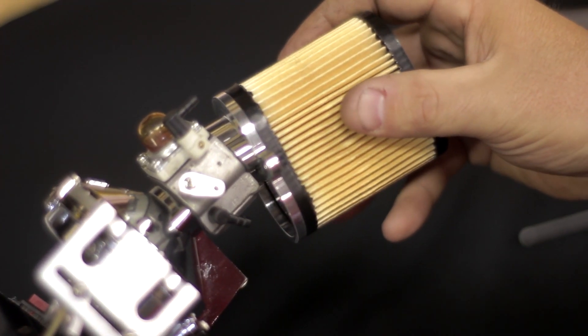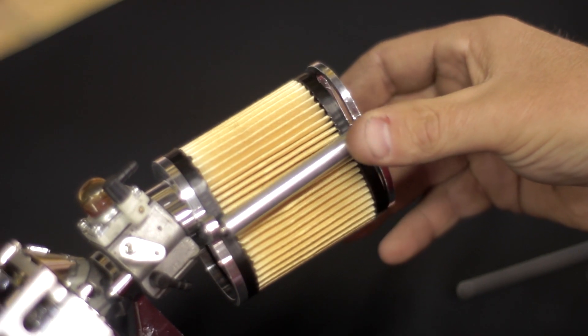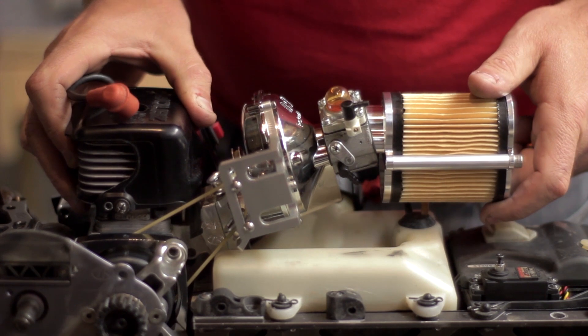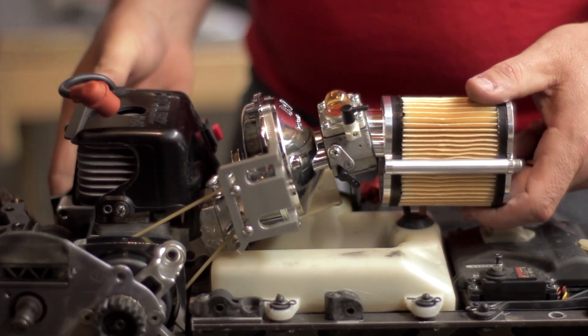Next we want to finalize the assembly of the filter. What this filter assembly allows is the filter to be dropped to a lower position for a perfect mount inside the Baja chassis.